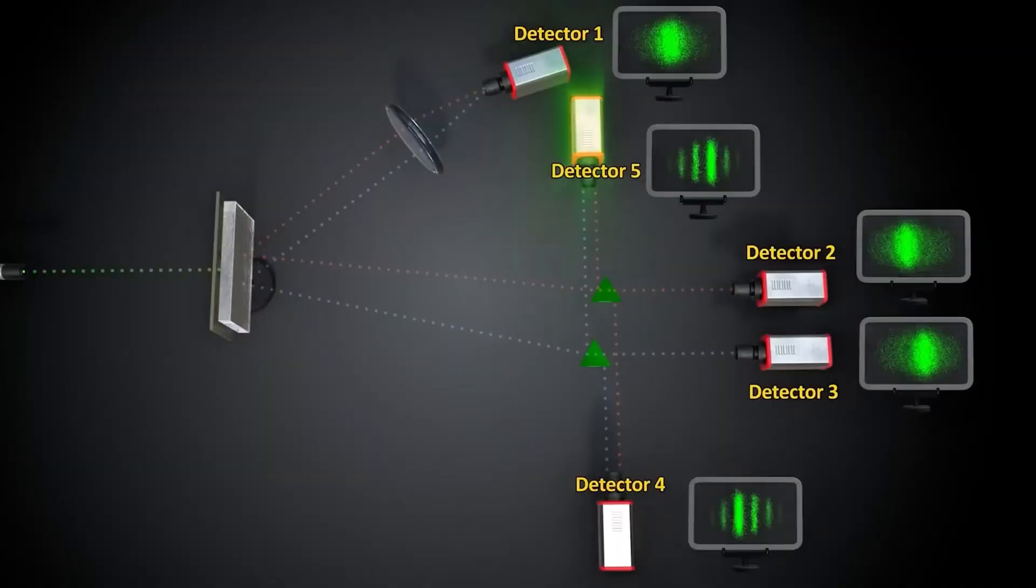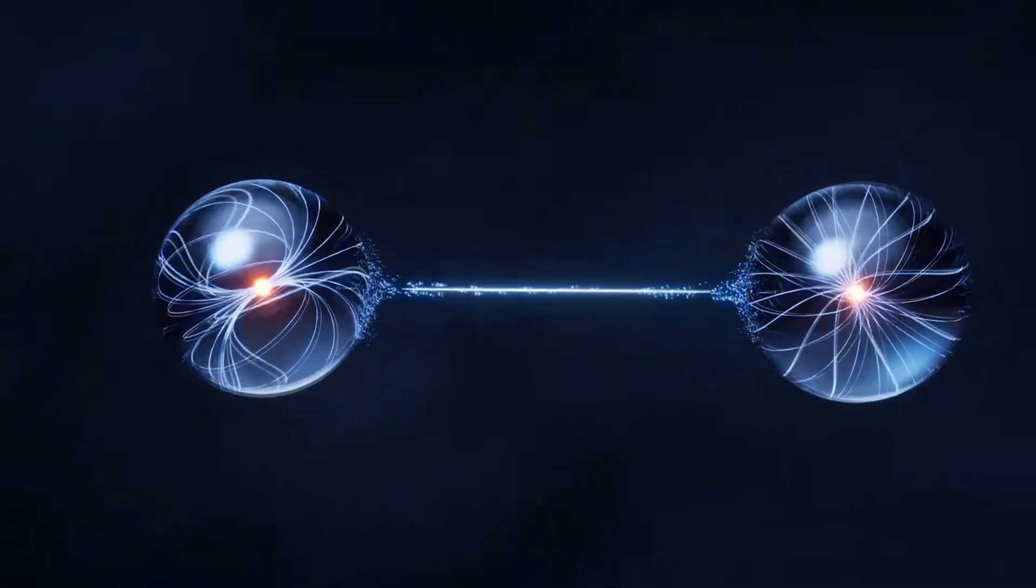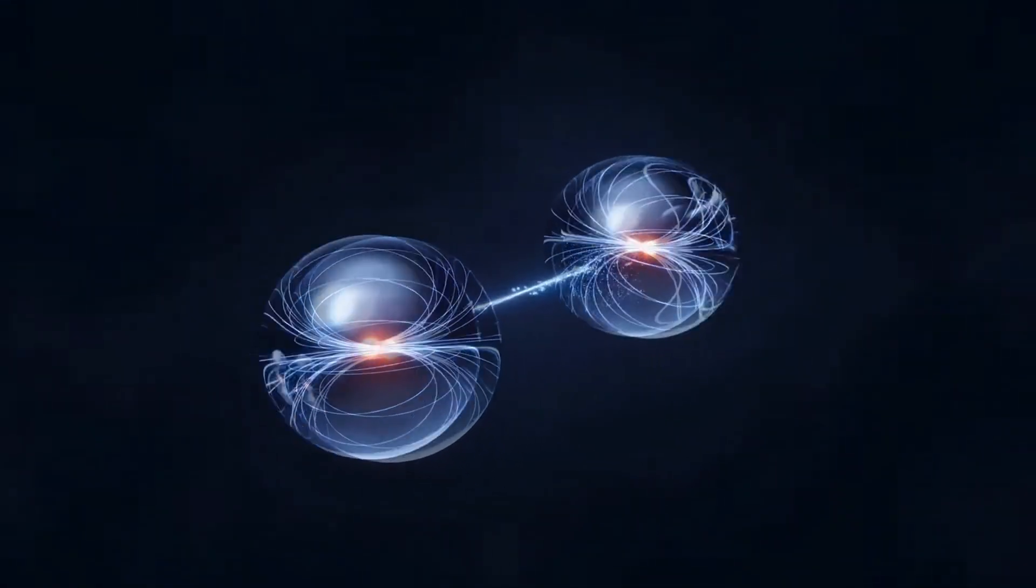Double slit experiment: When we shoot tiny particles through two slits, they make a wave pattern, like they went through both slits at the same time. But if we watch them, they choose one slit and act like a normal particle. Just watching changes what they do.